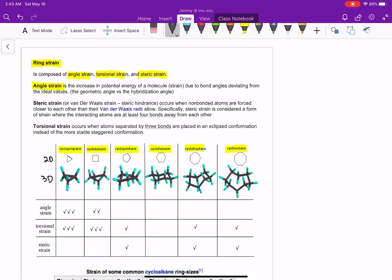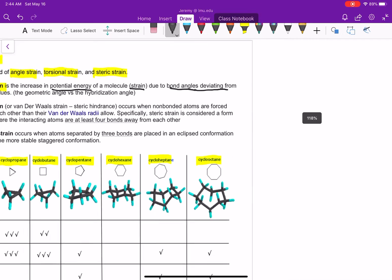Angle strain is really the increase in potential energy, so the molecule is less stable. The increase in energy of a molecule or the strain due to bond angles deviating from their ideal values. Essentially, the geometric angle of the shape is different than the hybridization angle.